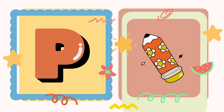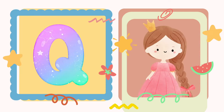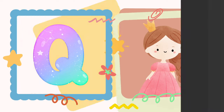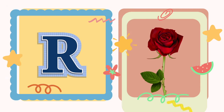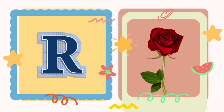P. P is for pencil. Q. Q is for queen. R. R is for rose.